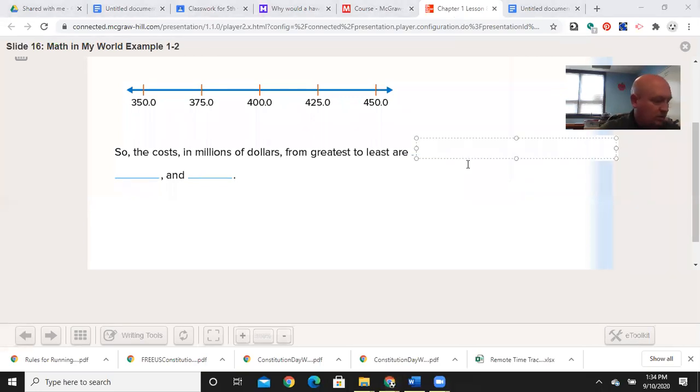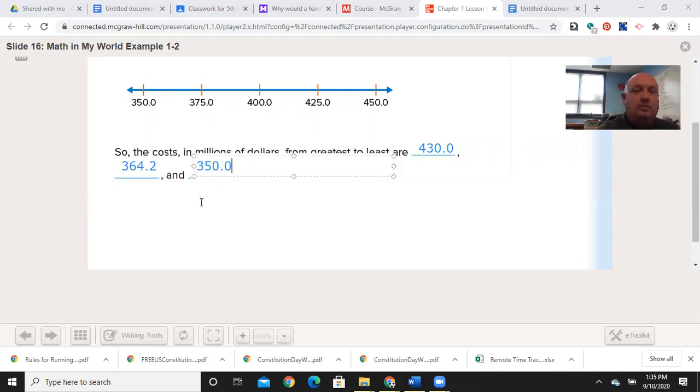So now you could see the cost. The total cost in millions from greatest to least: 430.0, next one 364.2 million, little chump change if you have in your pocket, 350.0 million dollars. So if you look, they are going in fact from greatest to least. If I asked for least to greatest, then I would have started out at 350 and gone up to 430.